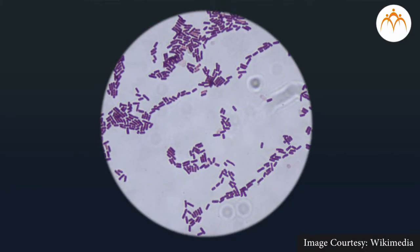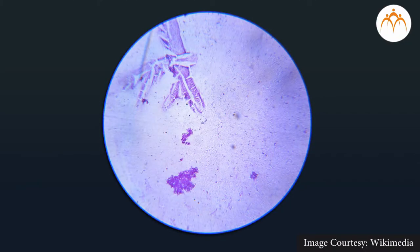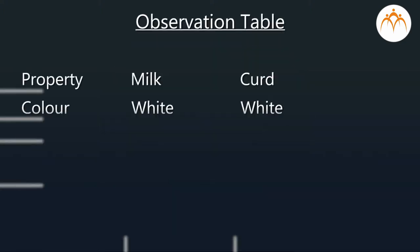Observation: Initially, milk was white-colored liquid with little sweet taste due to the sugar lactose in it. Later, when the milk turned into yogurt, it was white, soft, solidified, and a little sour to taste. In the slide, rod-shaped bacteria were seen in large numbers.